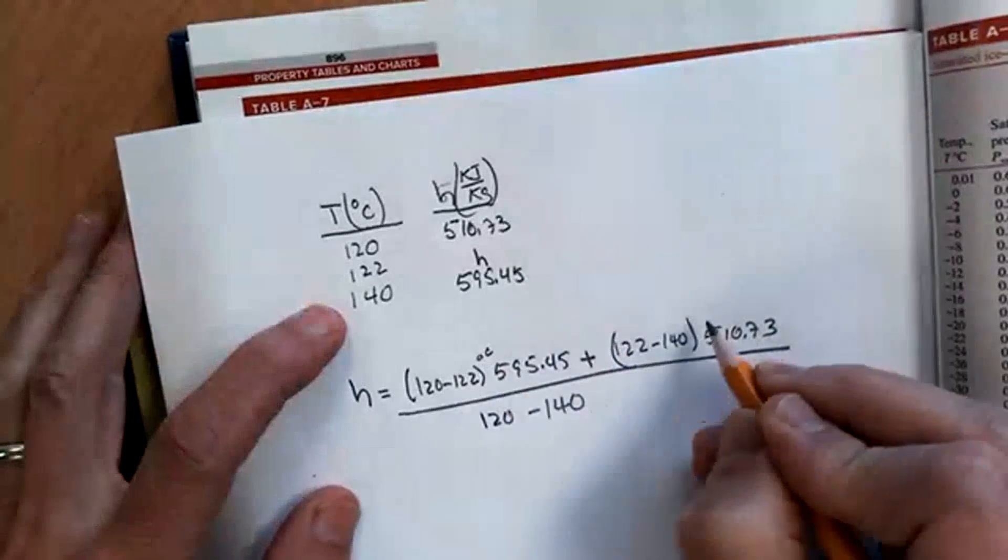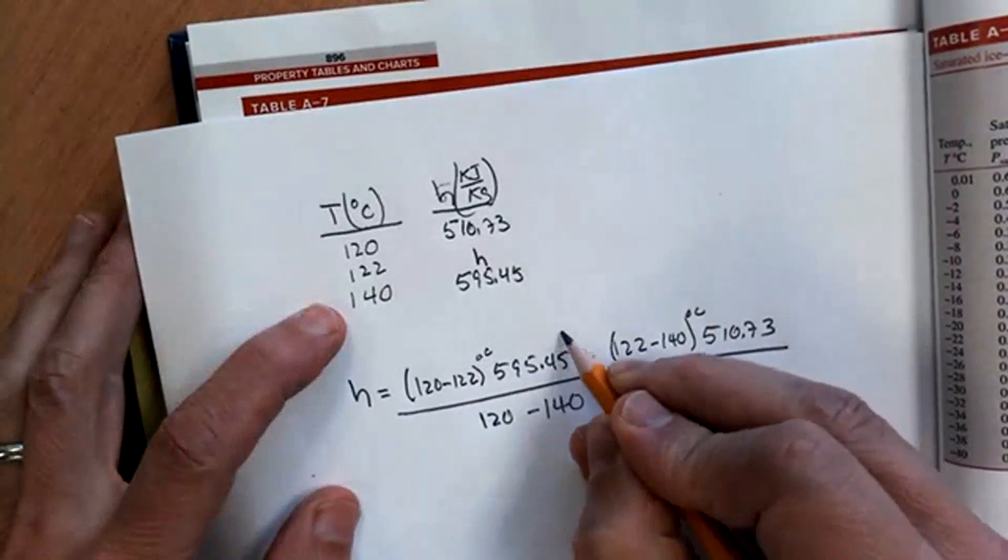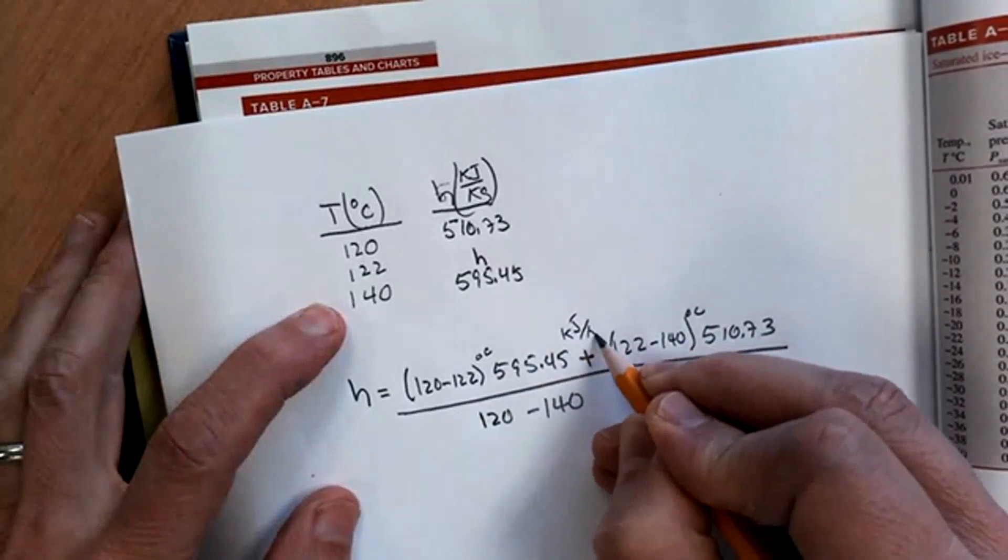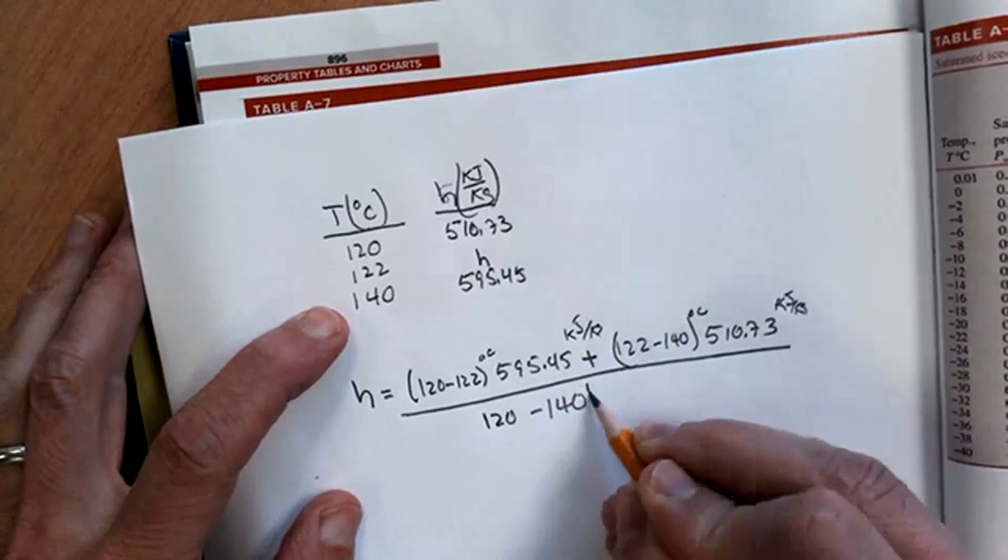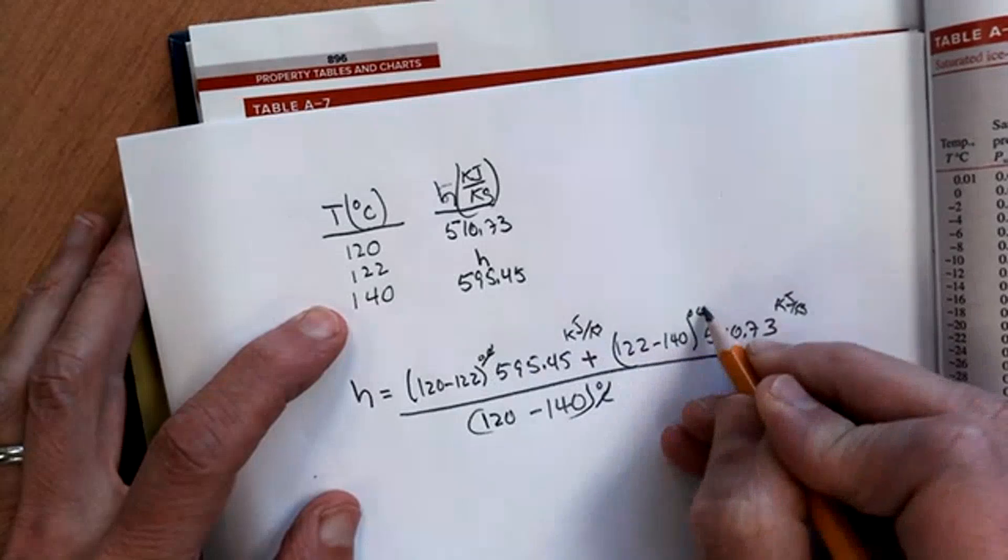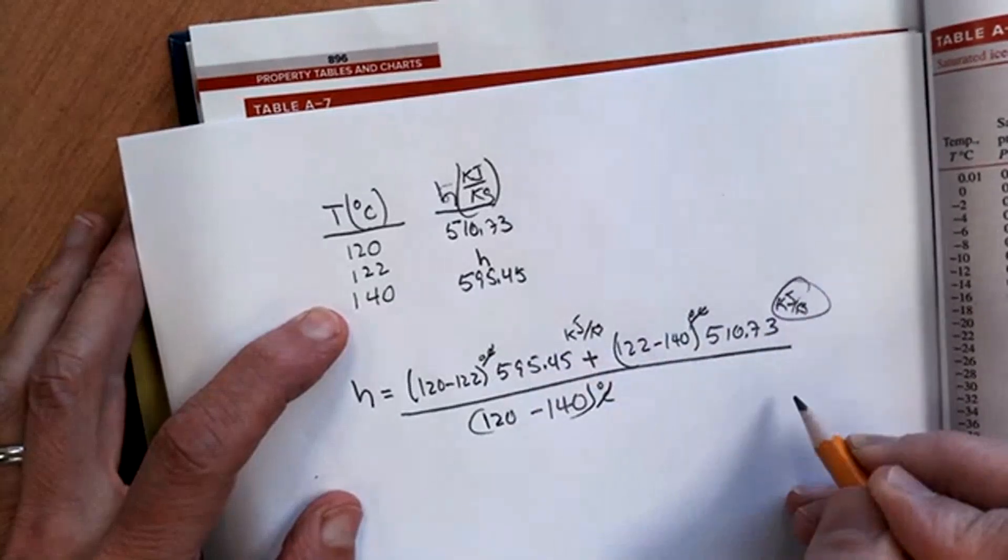You can also see that this is in degrees Celsius, degrees Celsius. This is in units of kilojoules per kilogram, kilojoules per kilogram. This is in degrees Celsius. So you can see that the Celsius are all going to cancel and you're going to be left with kilojoules per kilogram.